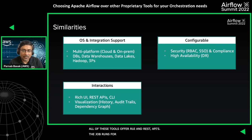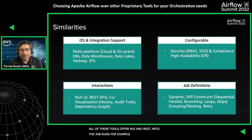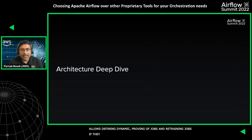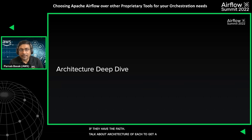The UI allows multiple types of views for your job runs — for example, dependency graphs, audit trails, and historical runs. Finally, the job definitions for all of these tools are robust: they allow defining dynamic jobs, grouping of jobs, and retrying jobs on failure.